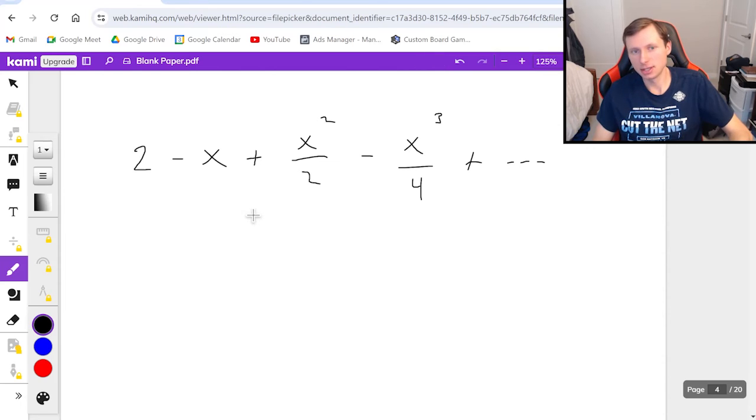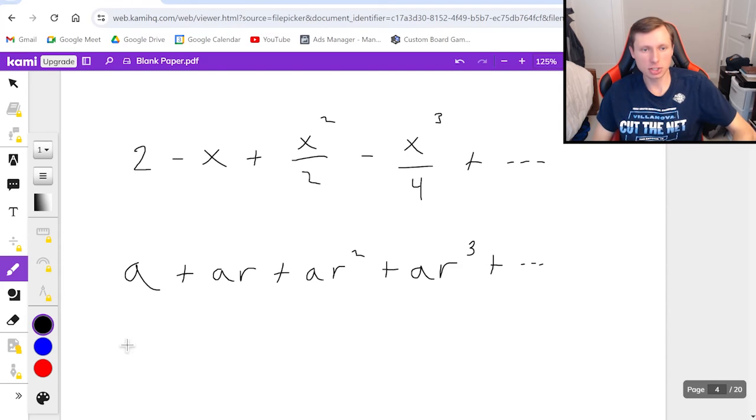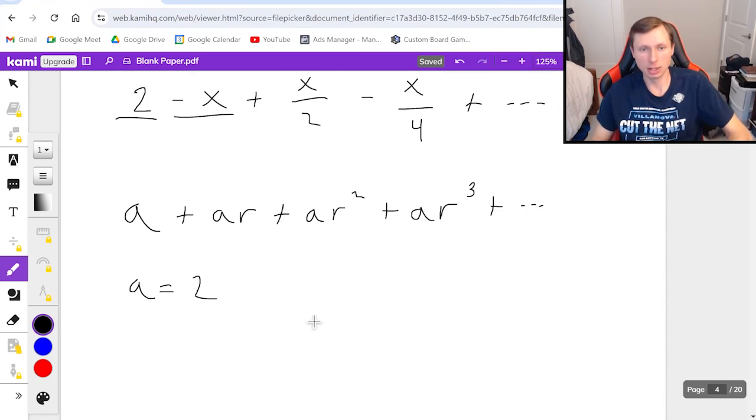So first I would say that this is in the geometric form, or I'm not sure if you're familiar with this or not, but the geometric form when you write it out as terms is a plus ar plus ar squared plus ar cubed plus dot dot dot. Meaning the first term is a, a is just 2. And if I want to find out what r is, I just have to take this term negative x and divide it by the first term 2. In other words, I'm saying r equals negative x over 2. And that's true.